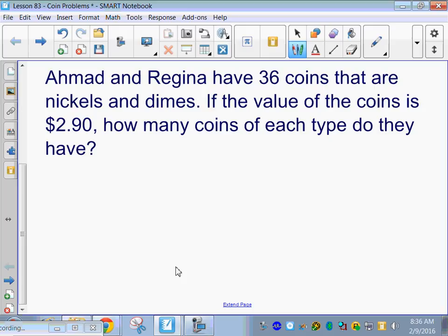Alright, so first of all, there's 36 coins, and they're either nickels or they're dimes. So basically there's two equations. One is just total coins, and one is total money, total value.